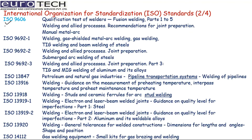ISO 9606 is the most important standard, which is basically for the qualification test of welders. It has five parts: part one is for ferrous metals such as mild steel and carbon steel; part two is for aluminum; and it carries on up to part five. So ISO 9606 covers the qualification of welders across different metals. The other processes are just for academic interest — you can go through the remaining standards.